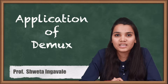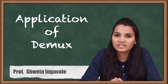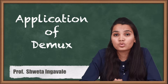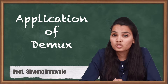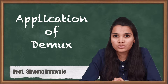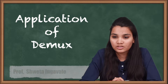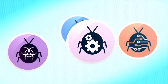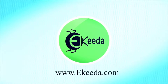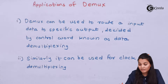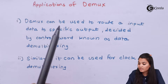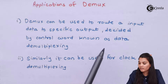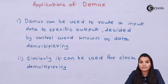Demux has various applications in digital electronic circuits where it can be used for various things. The very first application of the demux is that it can be used to route input data to a specific output decided by a control line — this is known as data demultiplexing.